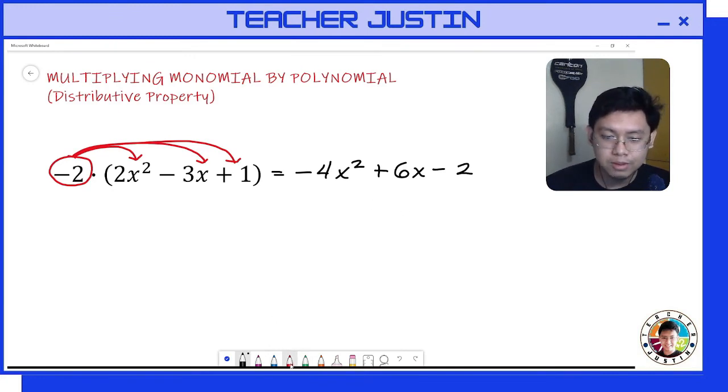And that will be our final answer: negative 4x squared plus 6x minus 2.